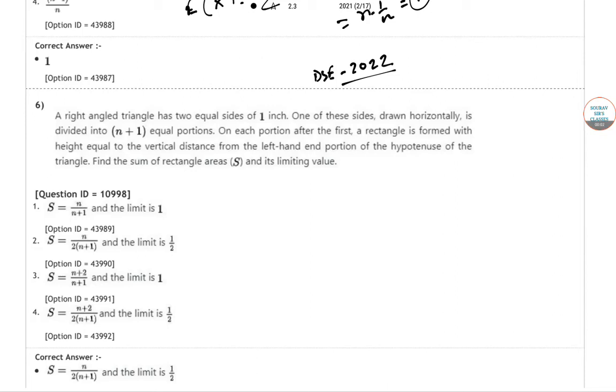Okay, so here we have a DSE 2021 question paper and question number 6 we are trying to solve. They have given a right angle triangle with two equal sides of 1 inch. One of the sides drawn horizontally is divided into n plus 1 equal portions. On each portion after the first, a rectangle is formed with height equal to the vertical distance from the left hand portion of the hypotenuse of the triangle. Find the sum of the areas and its limiting value.